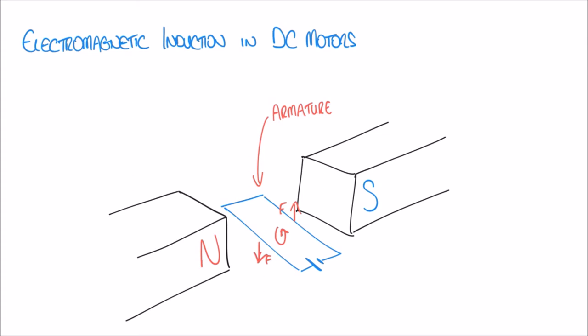Straight away though we run into a problem. As this rotational motion occurs, the force on one side of the circuit moves it upward and the force on the other side moves it downward, giving us that rotation. But as soon as one side of the circuit gets as high as it can go and the other side gets as low as it can go, the motion is going to stop.